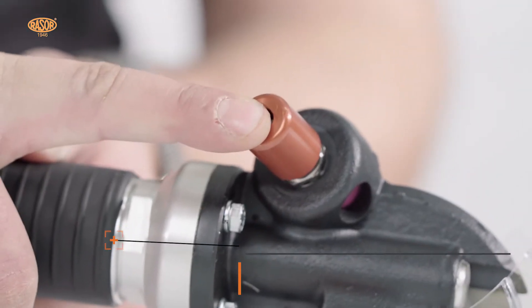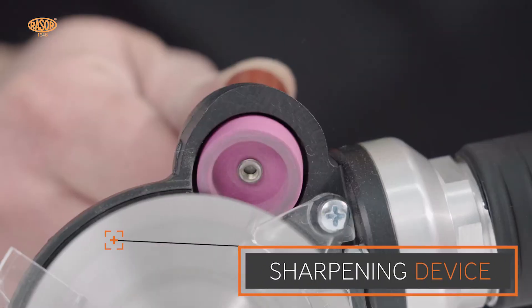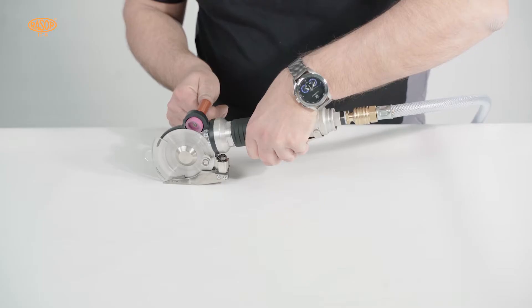With the half-automatic sharpening device, the blades can be reconditioned in between less than 10 seconds without dismantling.